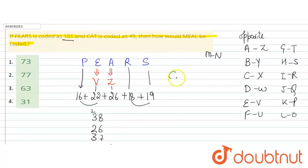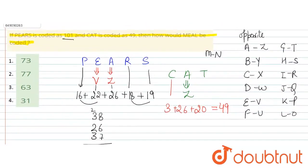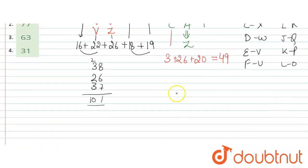In the same way, look here for CAT. C A T. A ka opposite hota hai Z. Now write place values. C ki place value 3, Z is 26, and T is 20. Adding these gives 49. So we only need to write opposites for vowels.